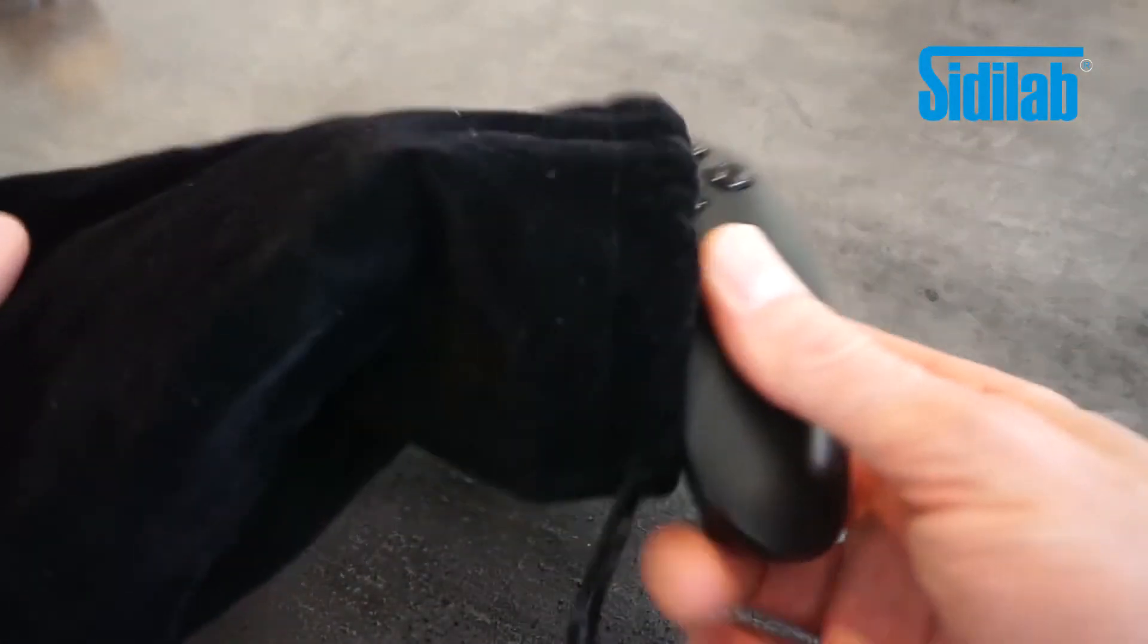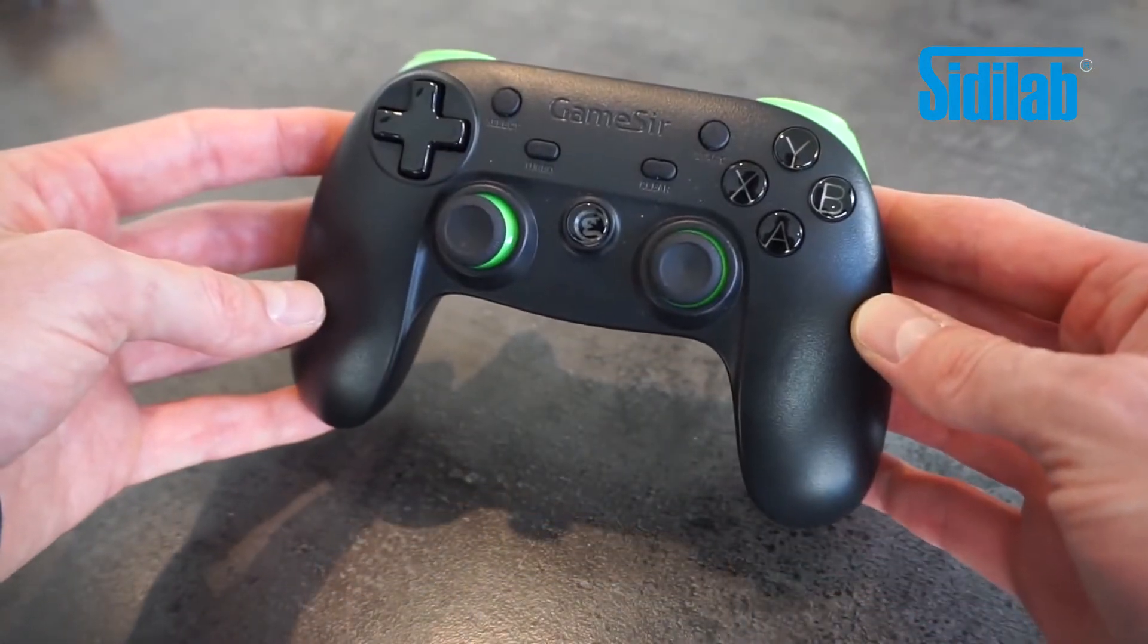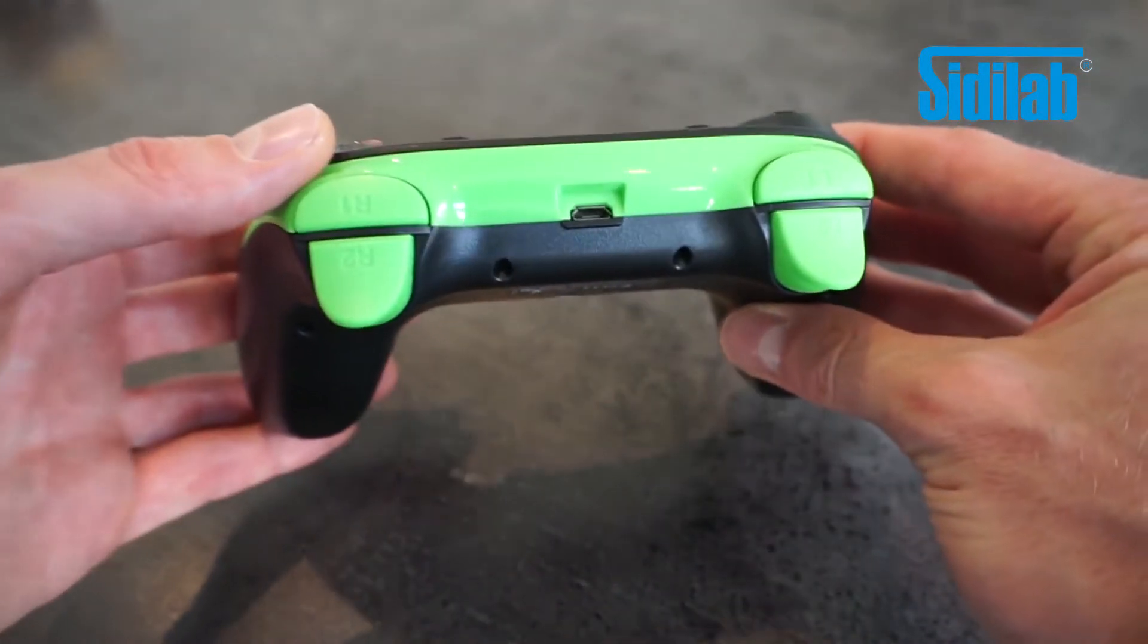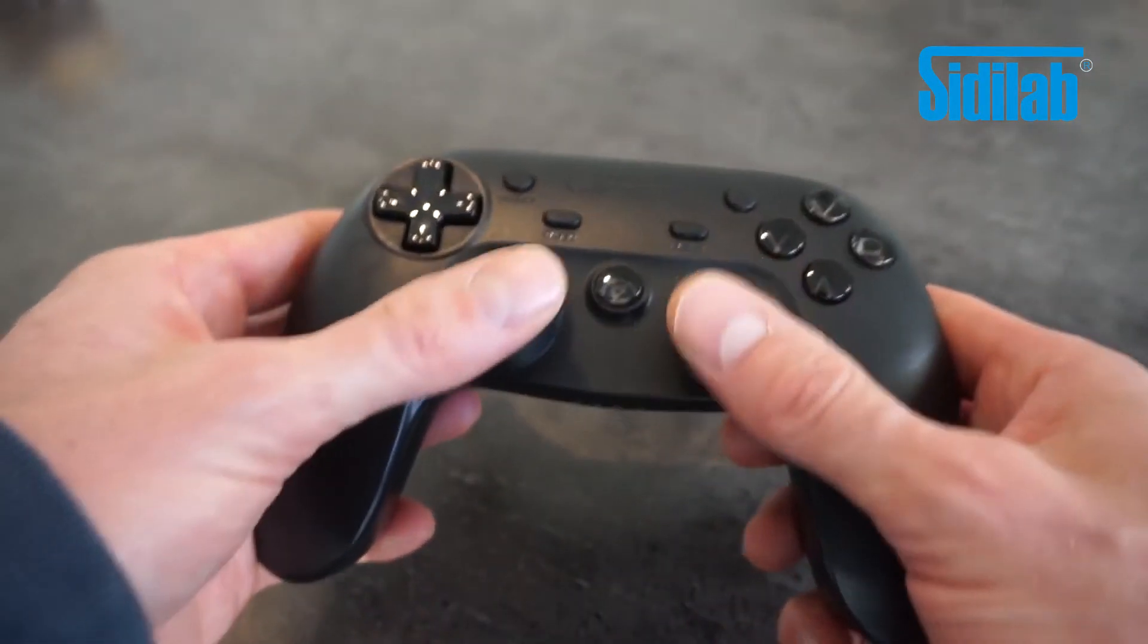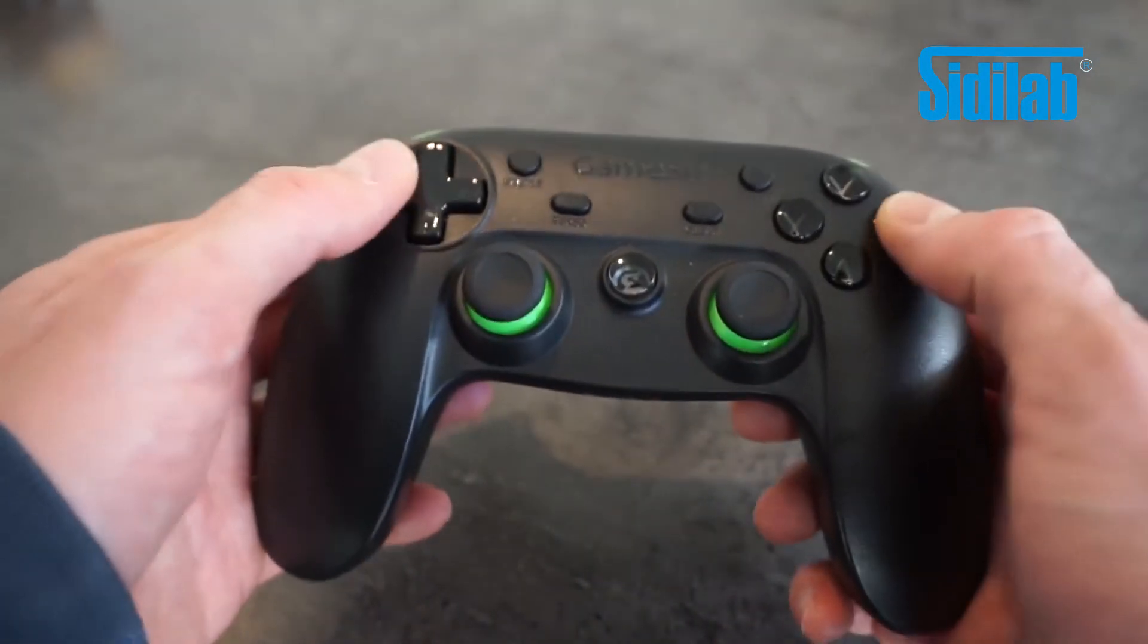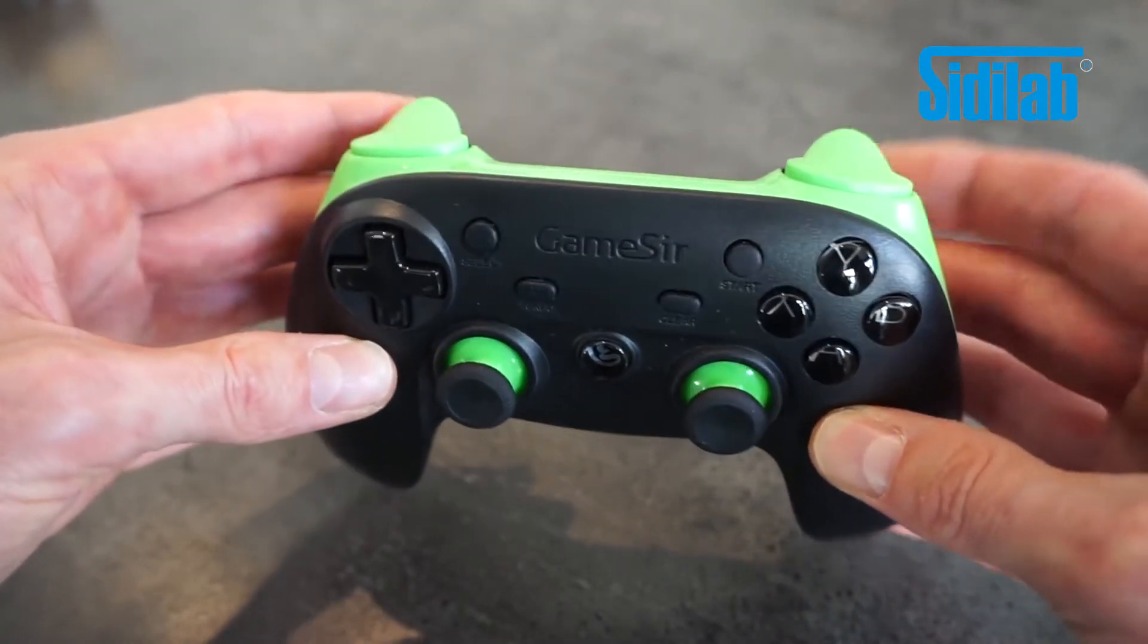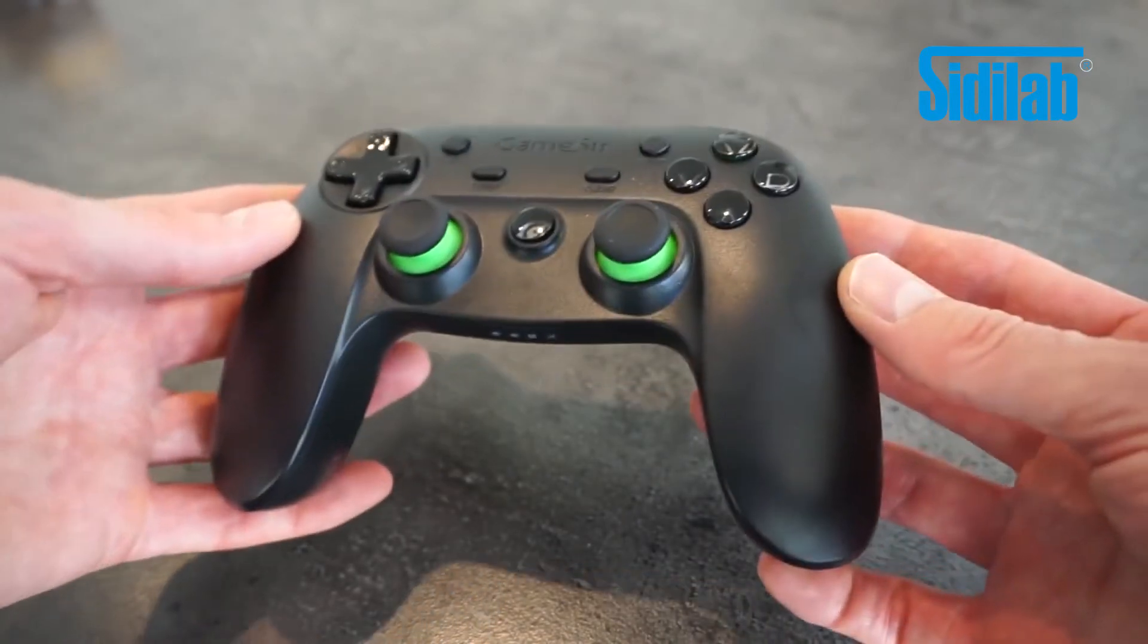Another method is by using the game controller. This can be connected to the USB host module with a wireless dongle or USB cable. The thumbsticks and the buttons can be used to move the arm and activate the effectors. The game controller has a decent build quality and the buttons and thumbsticks have a nice feel to them. Most importantly it's actually quite intuitive to move the robot arm around this way.